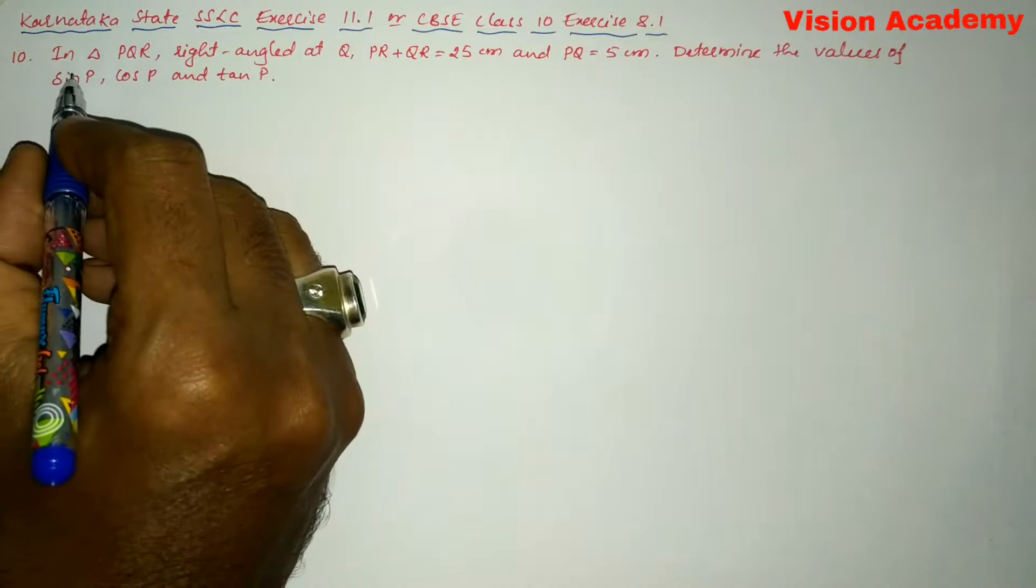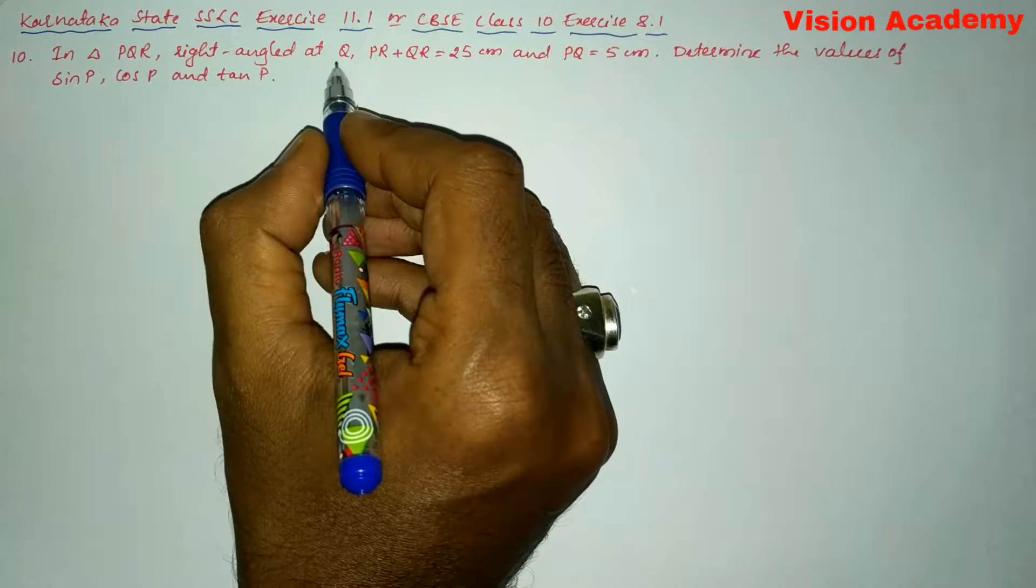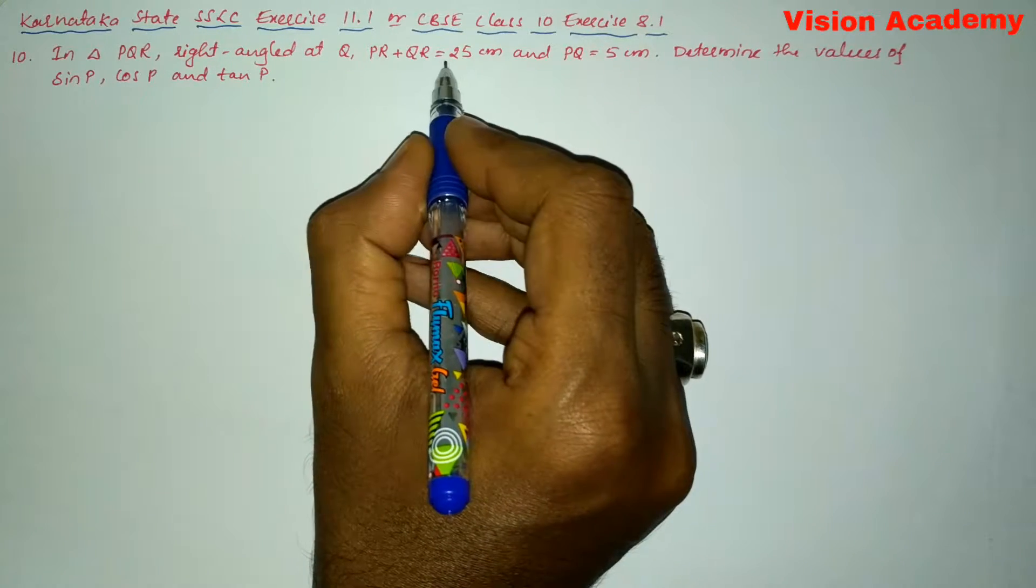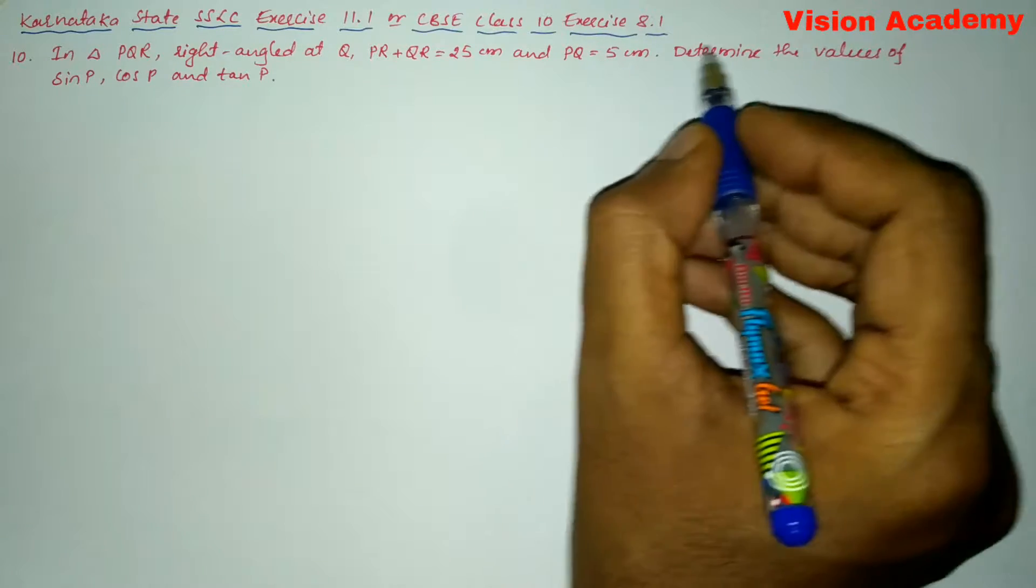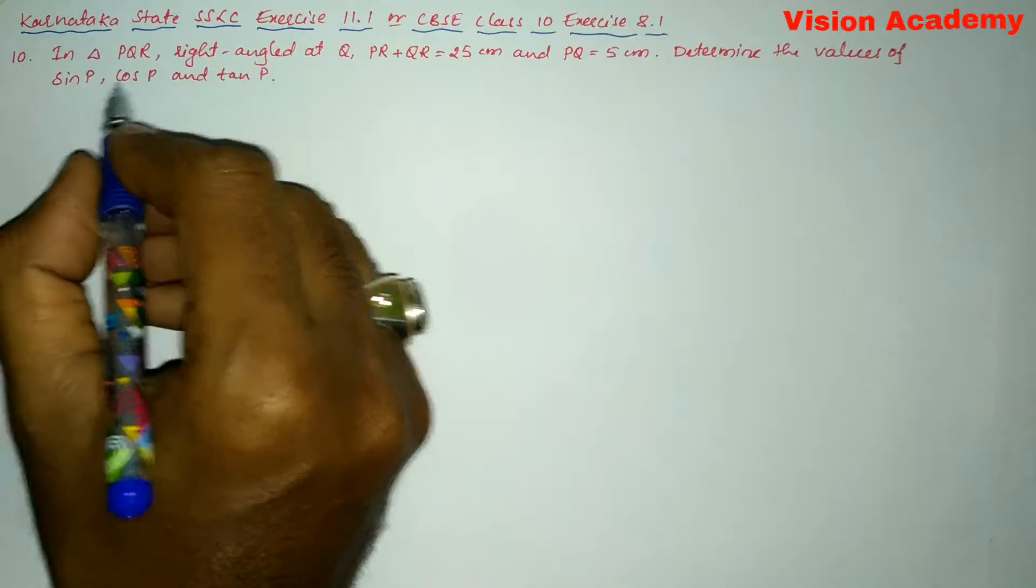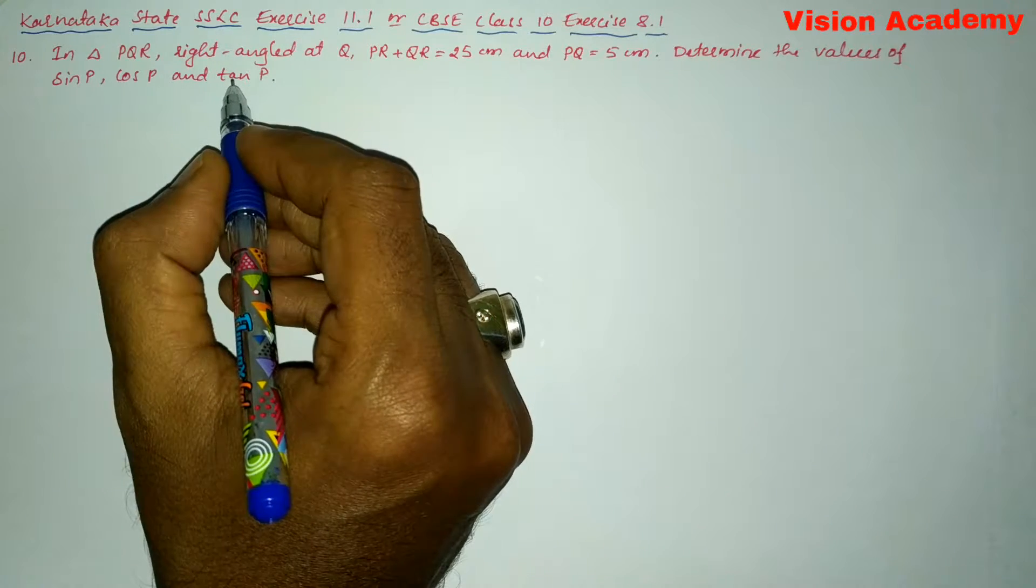Question number 10: In triangle PQR, right angle at Q, PR plus QR is equal to 25 centimeter and PQ is equal to 5 centimeter. Determine the values of sin P, cos P, and tan P.